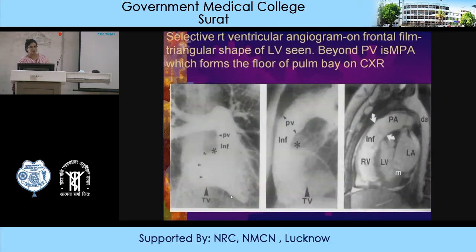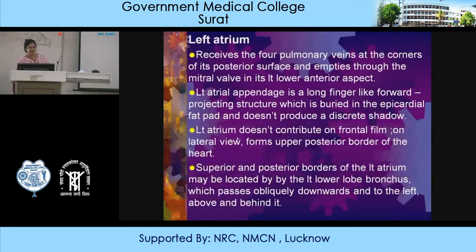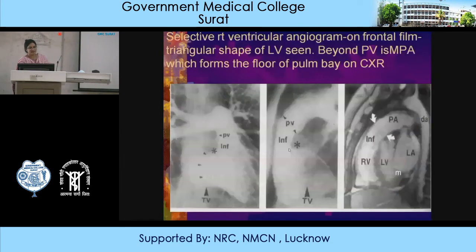On the frontal view of a selective right ventricular angiogram, the triangular shape of the right ventricle is seen. Beyond the pulmonary valve is the MPA, which forms the floor of the pulmonary bay on the chest X-ray. On the lateral view, you can see that the right ventricle forms the anterior-most aspect of the heart and gives rise to the pulmonary artery.